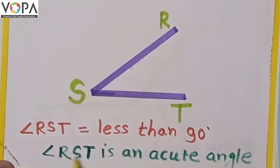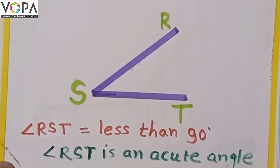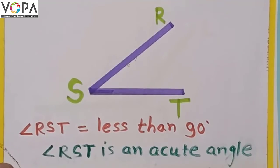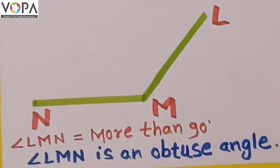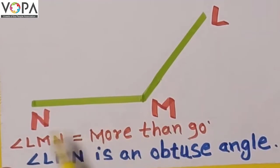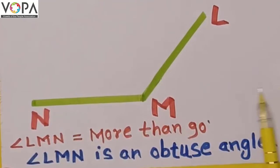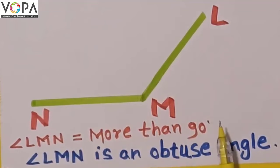Do you understand? Okay, next one. Read with me: angle LMN. Angle LMN is more than 90 degrees, means more than a right angle.